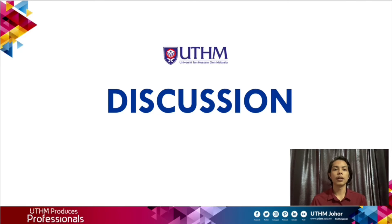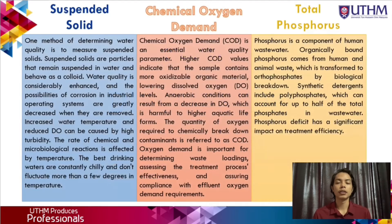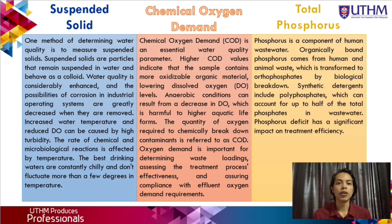My name is Islam Hakim. There are three types of efficiency this system addresses: suspended solid efficiency, chemical oxygen efficiency, and total phosphorus removal. Suspended solids are particles that remain suspended in water and behave as a colloid; water quality is enhanced and risks of corrosion in industrial operating systems are greatly decreased when they are removed. High turbidity can increase water temperature and reduce dissolved oxygen. The rate of chemical and microbiological reaction is affected by temperature.